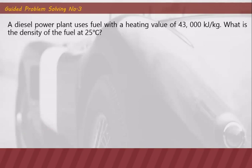Guided problem solving number three: a diesel power plant uses fuel with a heating value of 43,000 kilojoules per kilogram. What is the density of the fuel at 25°C? We need the SGT (specific gravity at temperature) multiplied by 1000. To get SGT we first need SGS, which we obtain from the relationship among SGS, API, and heating value.